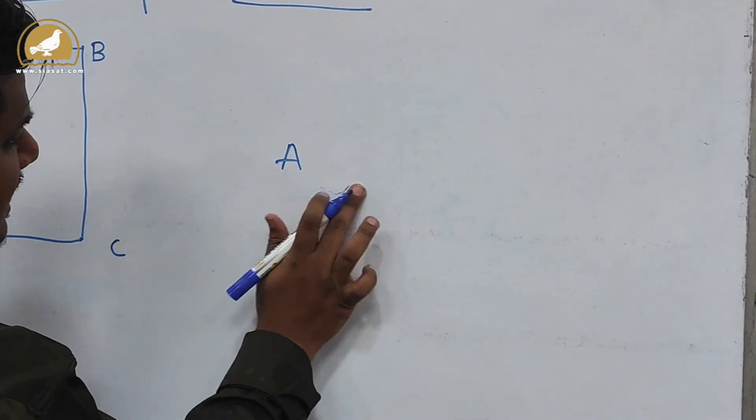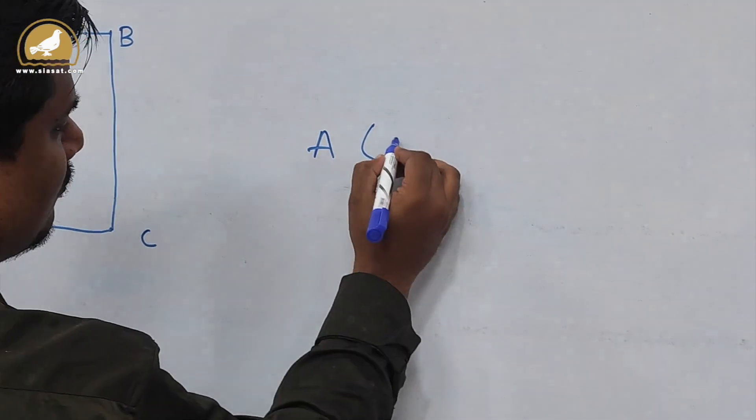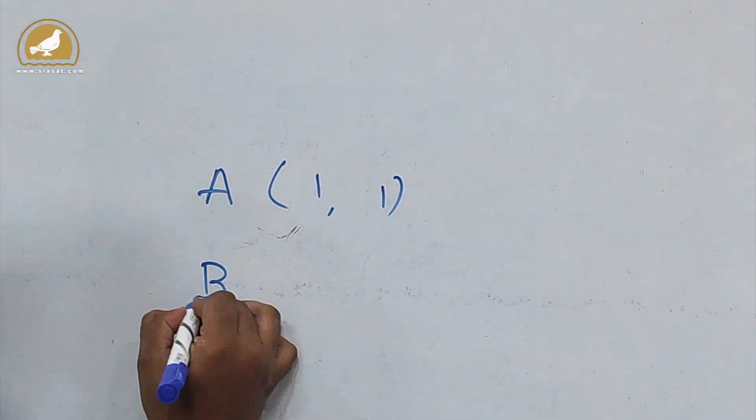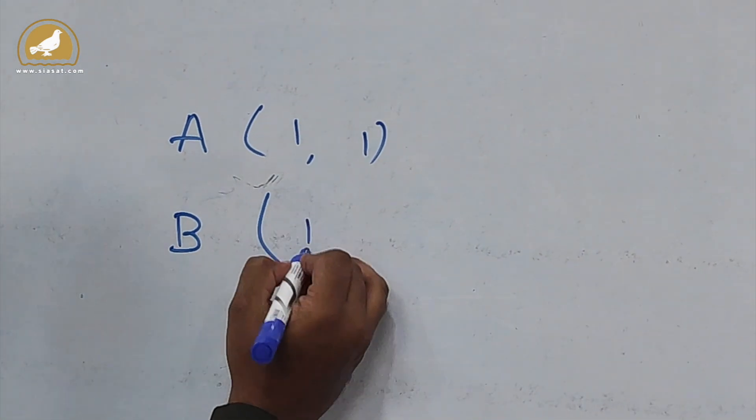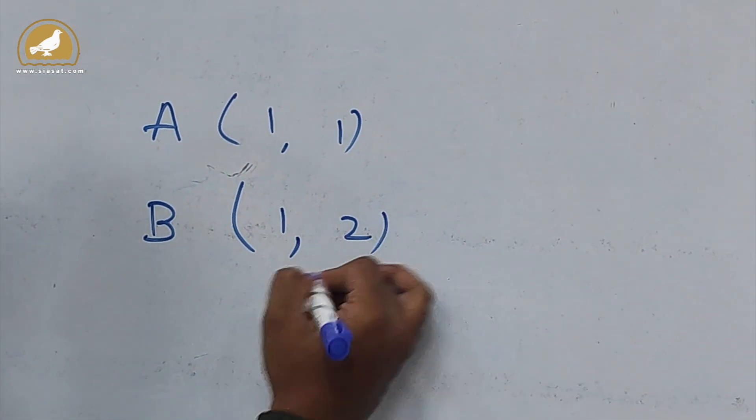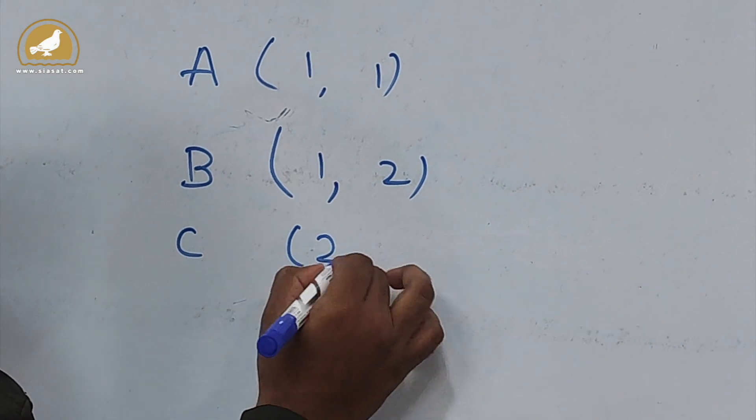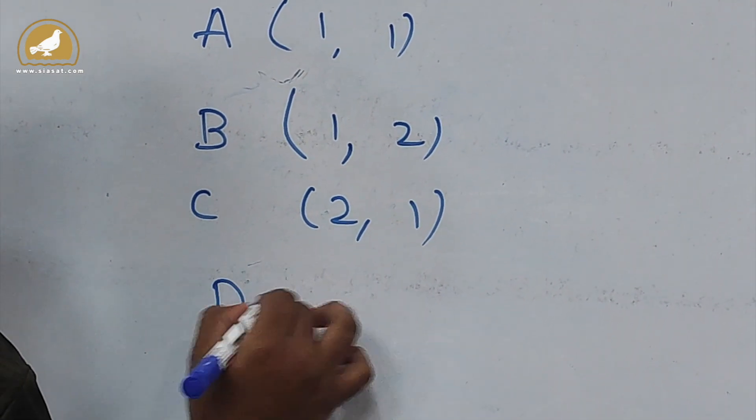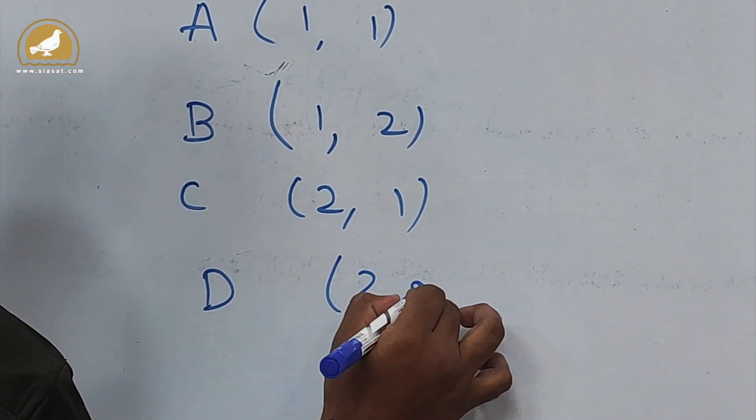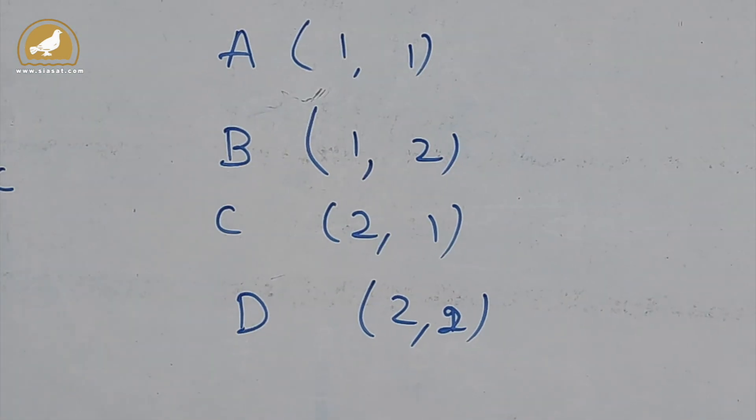Rather, they will give you points. For example, let us assume A(1,1), B(1,2), C(2,1), D(2,2). They will give you four points and ask you to find out whether the structure formed after joining these four points is a square or not.